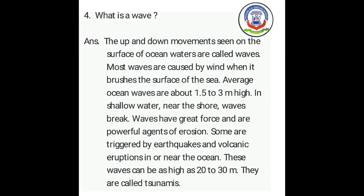Now let us understand question four: what is a wave? (Ek lahar kya hai?) The answer is: the up and down movements seen on the surface of ocean waters are called waves. (Samudra ke paani ki satah par upar aur neeche ki halchal ko laharen kahte hain.) Most waves are caused by wind when it brushes the surface of the sea. (Adhikaansh laharen hawa ke kaaran hoti hain, jab yah samudra ki satah ko sparsh karti hai.)